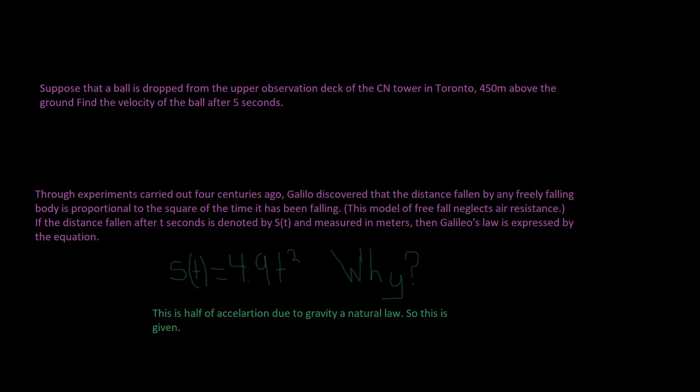Suppose that a ball is dropped from the upper observation deck of the CN Tower in Toronto, 450 meters above the ground. Find the velocity of the ball after five seconds.